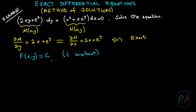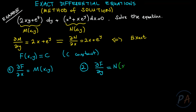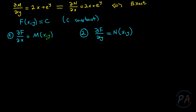This solution satisfies: the partial derivative of f with respect to x equals M(x,y), and the partial derivative of f with respect to y equals N(x,y). Since this is an illustrative example, I will solve the differential equation using the exact equation solution process — first by starting with the first equality, and then by starting with the second one.